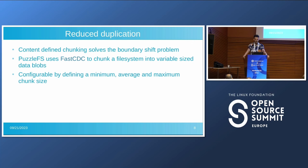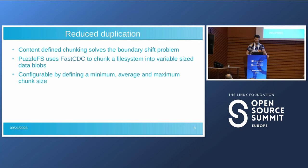To achieve reduced duplication, we use content-defined chunking, which solves the boundary shift problem. We use the FastCDC algorithm to chunk an entire file system into variable-sized chunks. With FastCDC you can specify a minimum, average, and maximum chunk size — essentially a range for the sizes of your chunks.